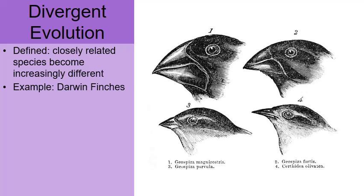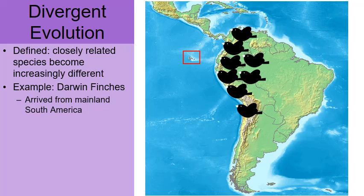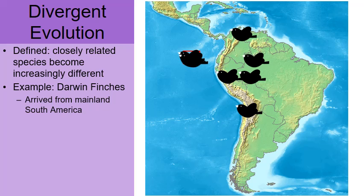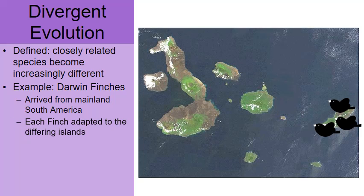Let's trace them back in time. Here's a picture of South America, and in the red box off the western coast of Ecuador is the Galapagos Islands. It's believed that these ancestral finches — represented here by a bunch of cartoonish birds — arrived at the Galapagos Islands from the mainland of South America. Here we are looking at an overhead satellite image of the Galapagos Islands, and each finch eventually adapted to the differing environments on the islands.